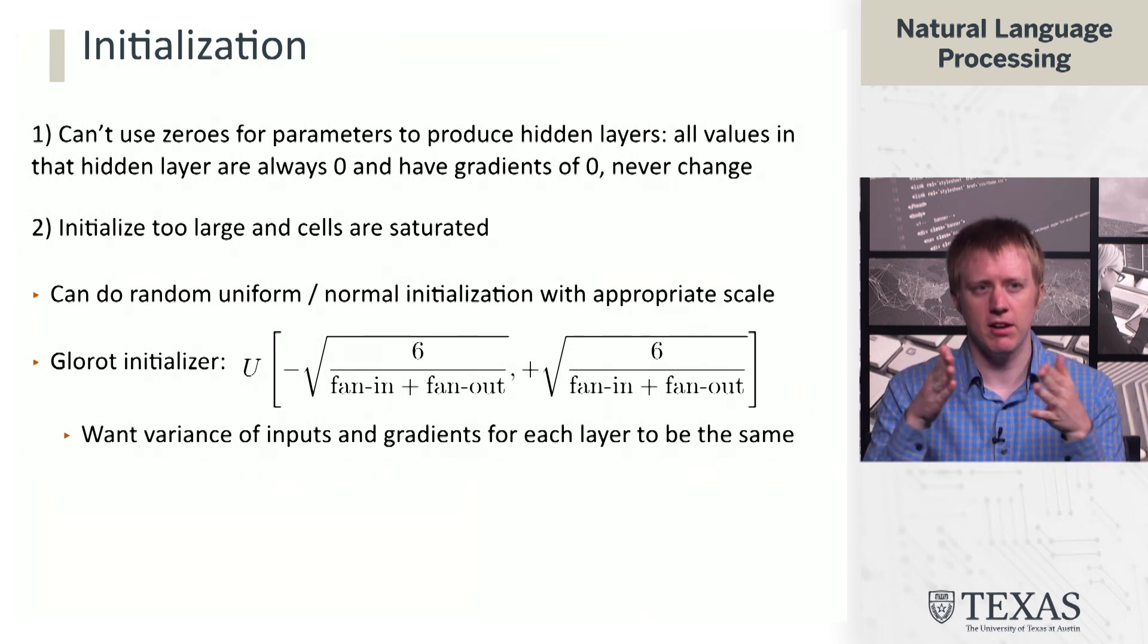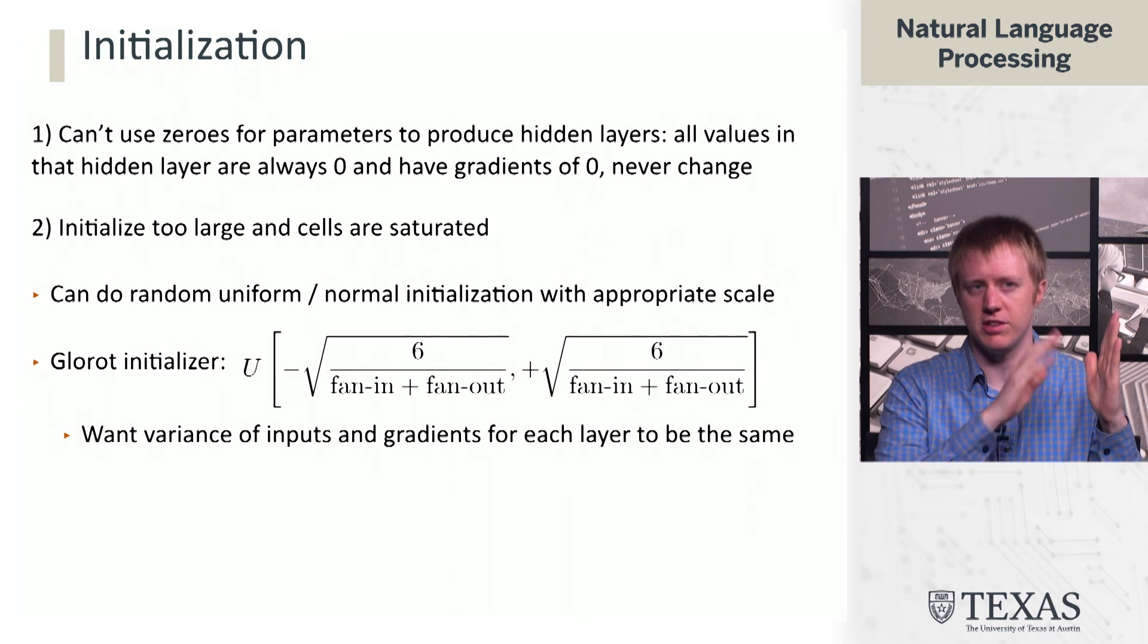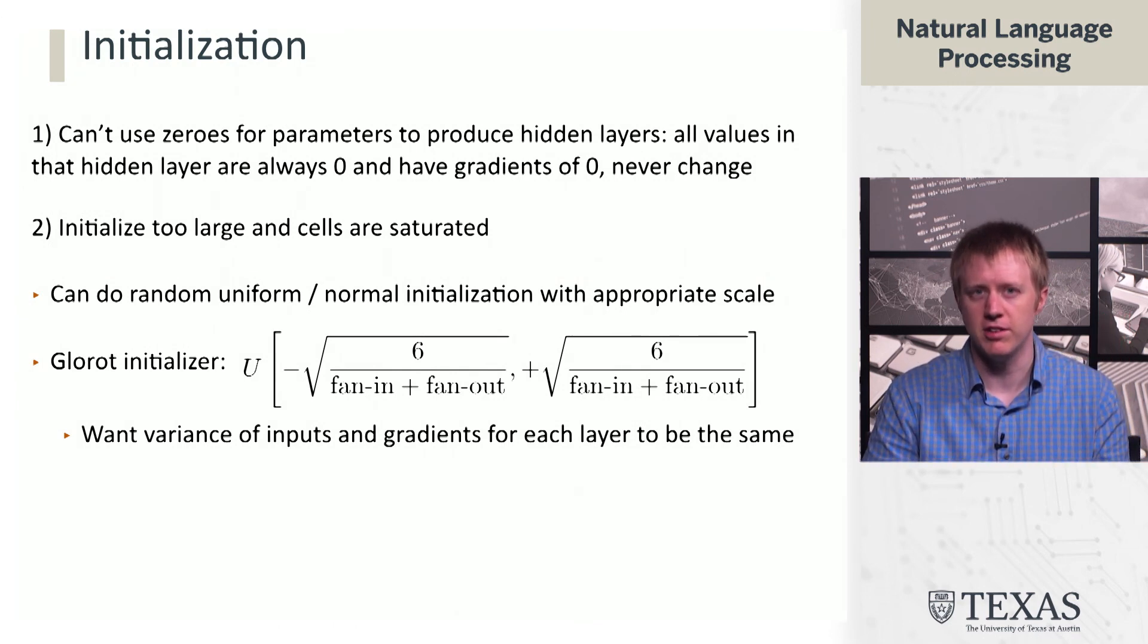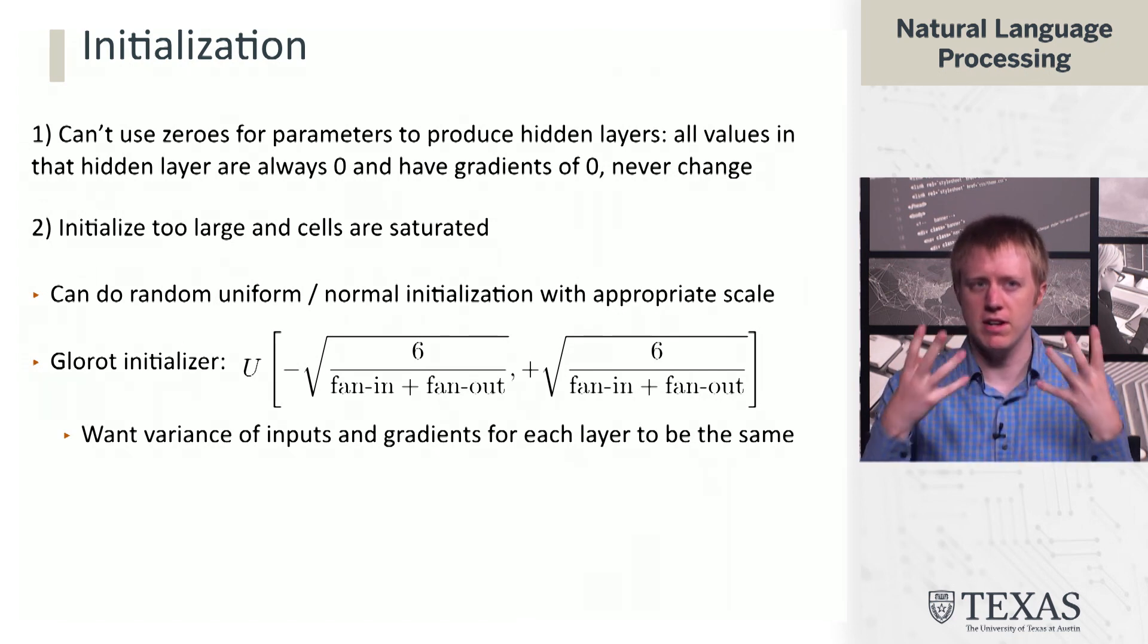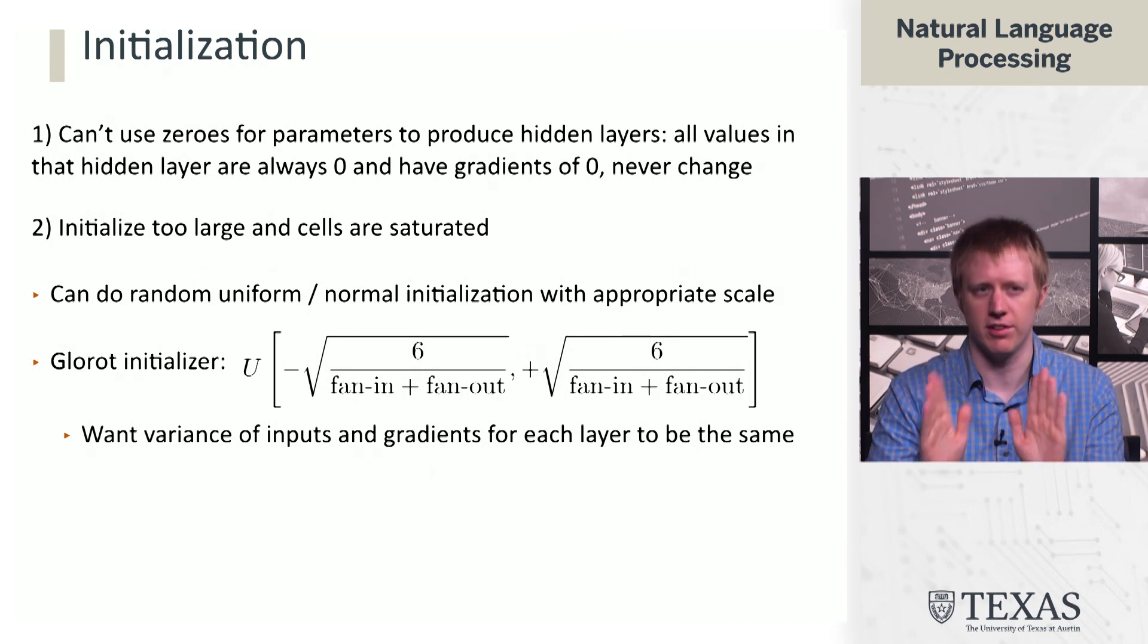The reason we scale things and do this funky thing is that we want the variance of the inputs and then the gradients for each layer to be about the same. We might have some layers in our network which are like 100 dimensions in and 50 dimensions out. We might have others which are 1,000 dimensions in and 500 dimensions out. And these are on very different scales, and so we need the right initializer that balances things so a single gradient update with a single step size can do something reasonable.